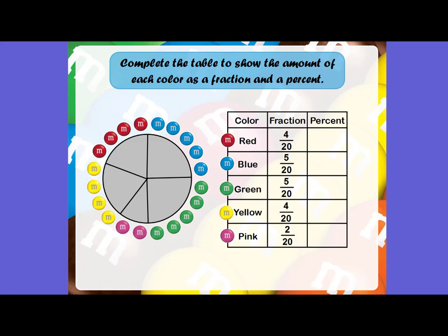The next step would be to change that fraction to a percent. The first thing you need to do is T-bow or divide. Change the fraction to a decimal and then move your decimal point two places to the right to make it a percent. So I'm going to go ahead and complete that column. And you can see that 20% are red, 25% are blue, 25% are green, 20% are yellow, and 10% are pink. And when you add up all the percents, it should equal 100% because that would be the entire bag.